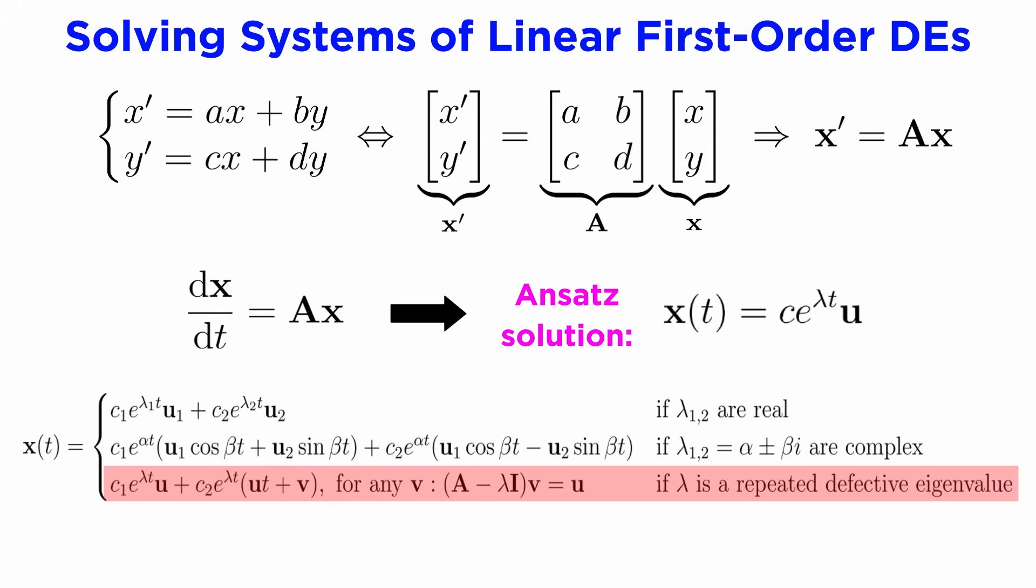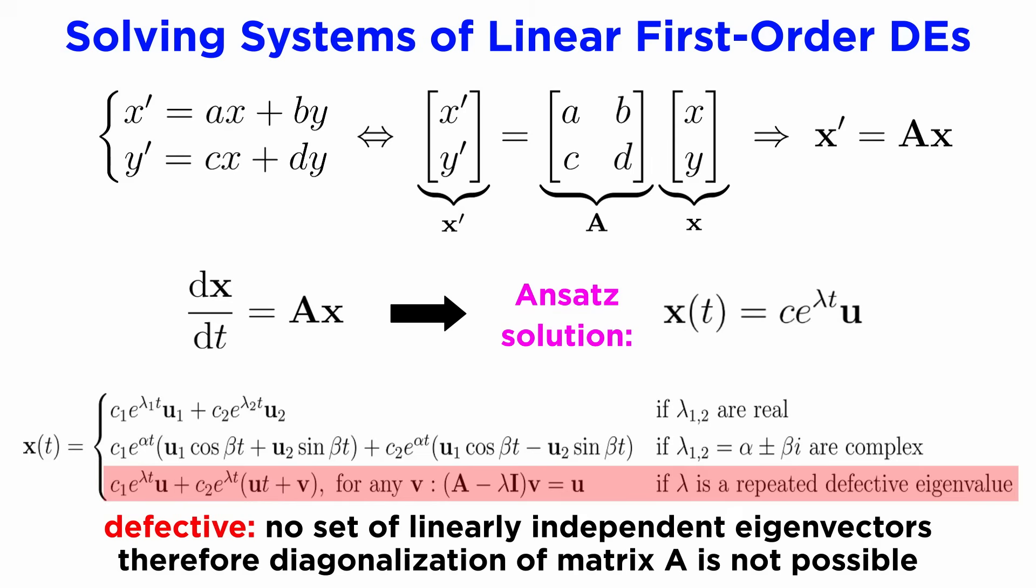Lastly, there is the third rare case of real repeated defective eigenvalues. Defective means that we are unable to find a full set of linearly independent eigenvectors for an eigenvalue, so a diagonalization of A does not exist, and this will turn out to be the equivalent of the repeated roots case, although here we need to find an additional constant vector v, such that A minus lambda i times v equals our one eigenvector u, and then we use the similar trick of multiplying the ansatz by t to get the general solution.